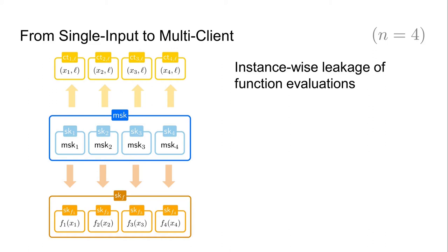The decryptor not only learns the evaluation of the separable function but also the evaluation of each individual single-input function. So for the word count example, the decryptor learns not only how many times the requested word appears in all the documents, but also how many times it appears in every single document. Therefore, we need to adapt the construction to prevent individual leakage by hiding the evaluations of the different single-input functions.